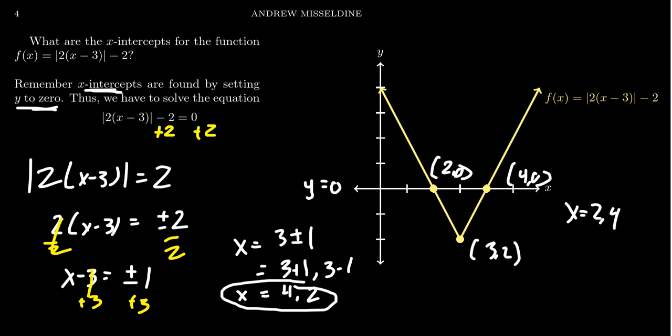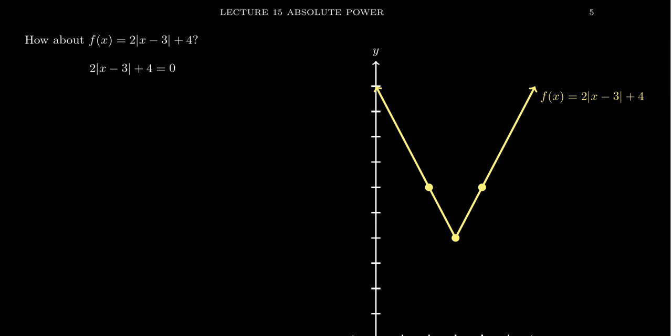It just means that when you want to get rid of the absolute value symbol on the left-hand side, you're going to have to insert a plus or minus into the equation. But like I said, there is a slight caveat, which I want to explore in this other example we did. So let's take the function f of x equals 2 times the absolute value of x minus 3 plus 4.